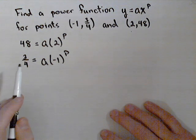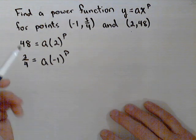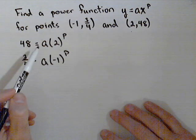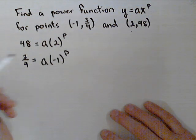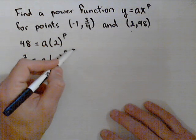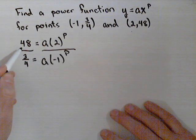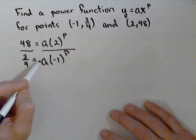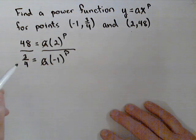Now what I'm going to do is, I have basically a system of equations. I have two equations with two variables. I'm going to use cancellation or elimination. I'm going to divide the two equations to eliminate the a over here because the a's will cancel.